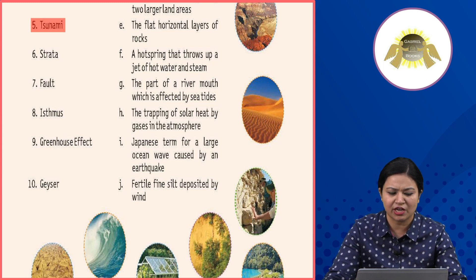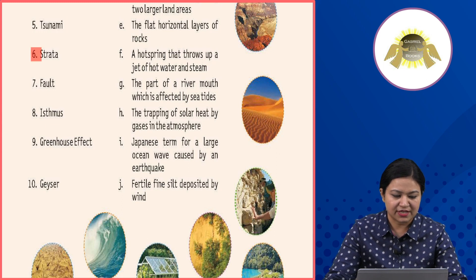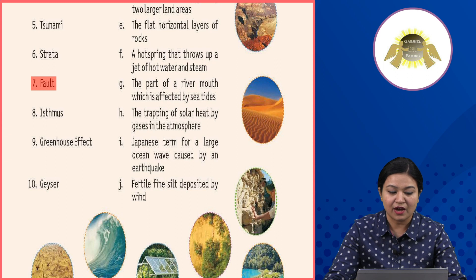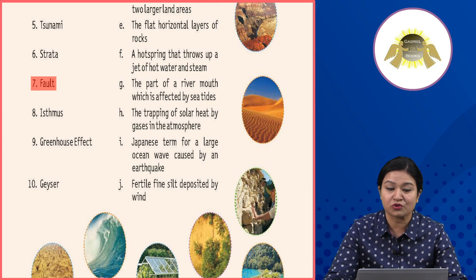Sixth: Strata — the flat horizontal layers of rocks. Seventh: Fault — a fracture along which two blocks of land move relative to each other.